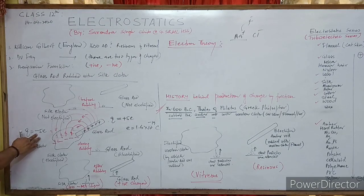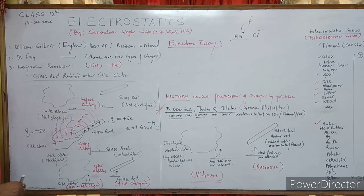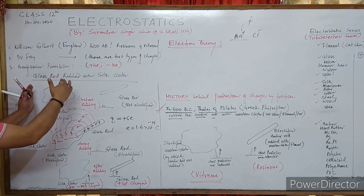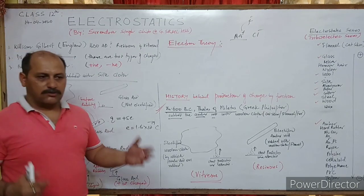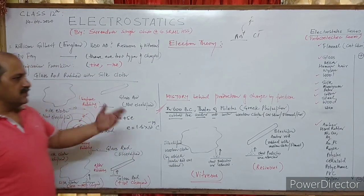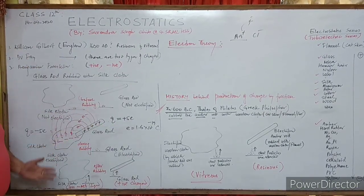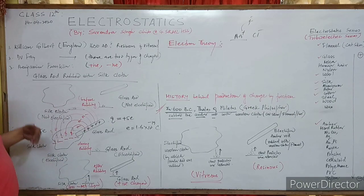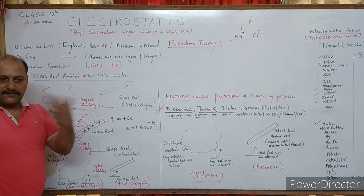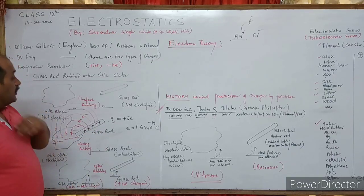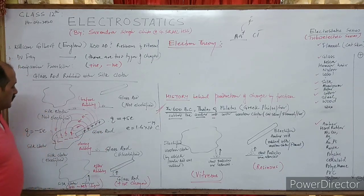The theory behind it is the electron theory — electrons get transferred from one body to another. So the body that takes electrons becomes negatively charged, and the body that gives electrons becomes equally positive.